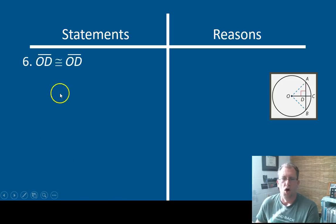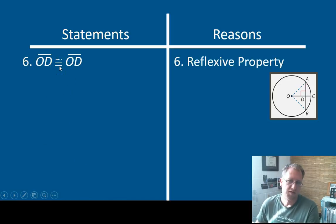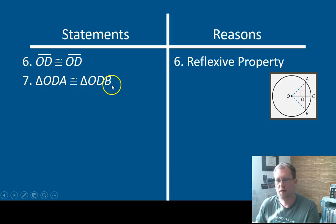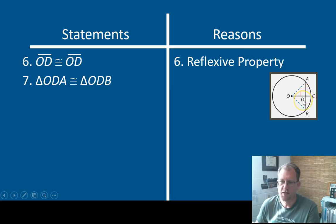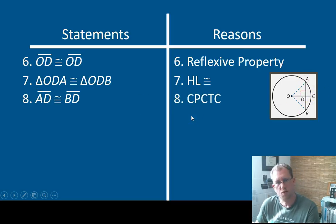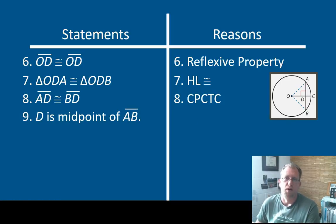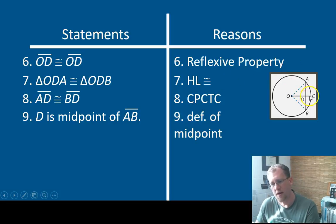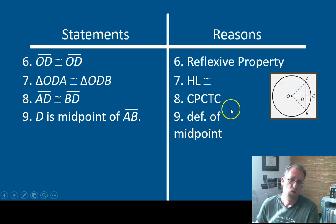OD is congruent to itself — that's the reflexive property. Triangle ODA is congruent to triangle ODB. We've got congruent lines, congruent lines, OD as itself, and we've got right triangle angles — so we can use the hypotenuse-leg postulate of congruence. AD is congruent to BD because corresponding parts of congruent triangles are congruent. So that demonstrates that D is the midpoint of AB — by the definition of midpoint. This shows that when a radius intersects a chord at a 90-degree angle, it does so at the midpoint of the chord, and bisects it into two halves.